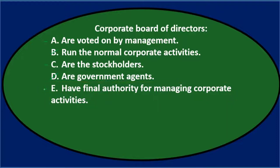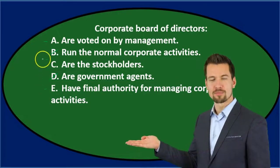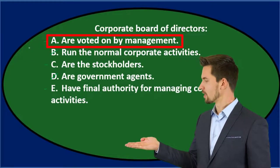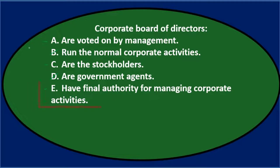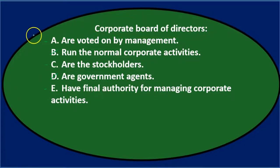One tip: if there's a longer, more detailed answer, you may want to give it more consideration. A longer statement is often trying to be as specific as possible to be correct. So we're down to A, C, or E — voted on by management, are the stockholders, or have final authority for managing corporate activities.